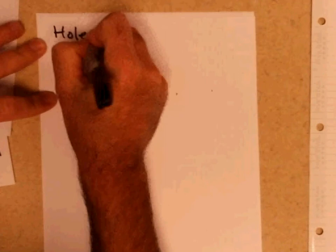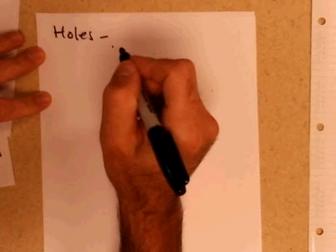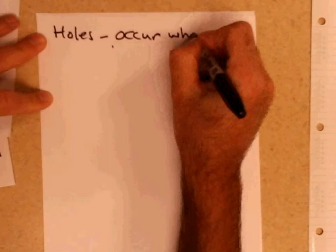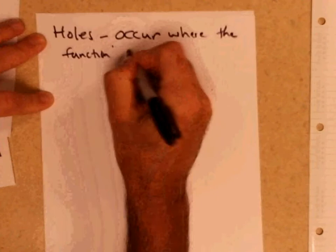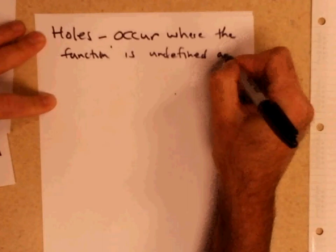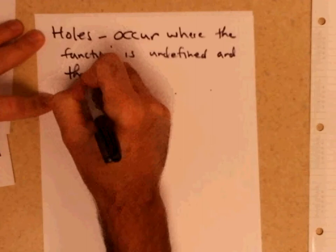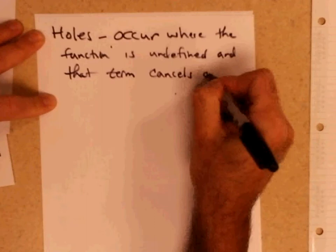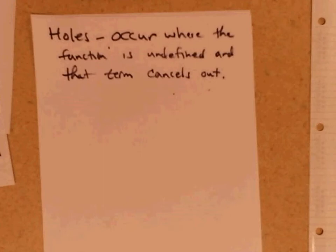We also have holes in the graph — that's the last thing. Holes occur where the function is undefined and that term cancels out.